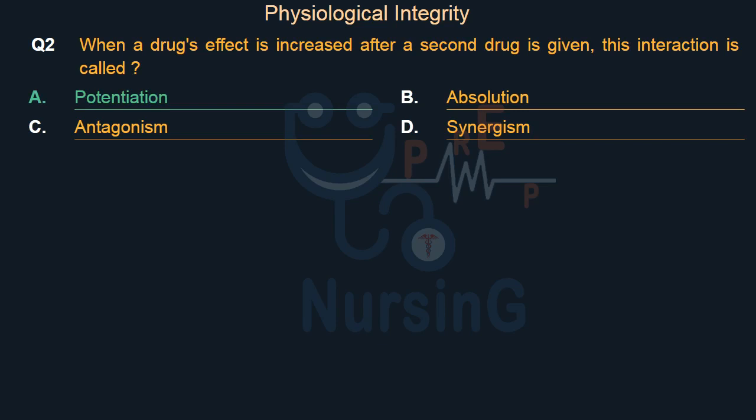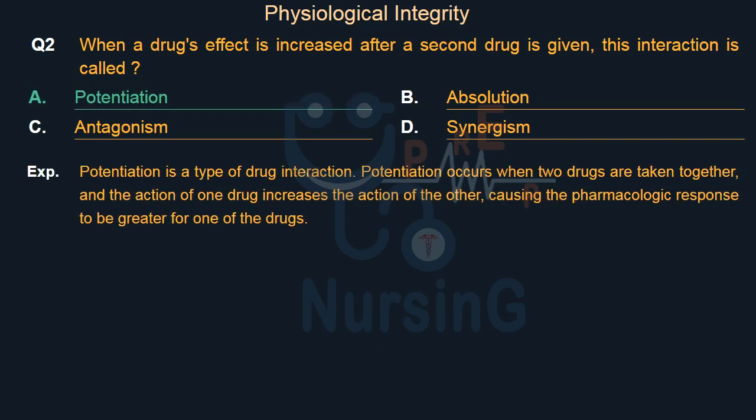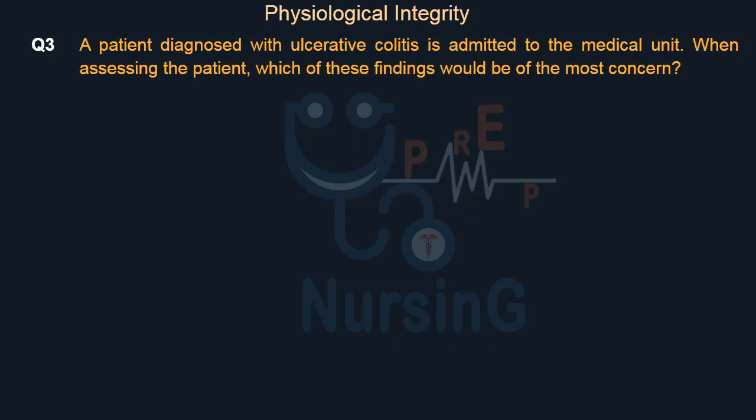The right answer is Option A: Potentiation. Potentiation is a type of drug interaction that occurs when two drugs are taken together and the action of one drug increases the action of the other, causing the pharmacologic response to be greater for one of the drugs.